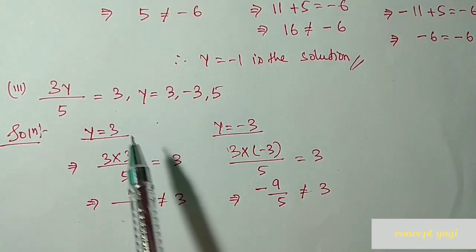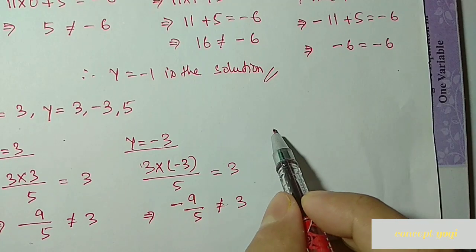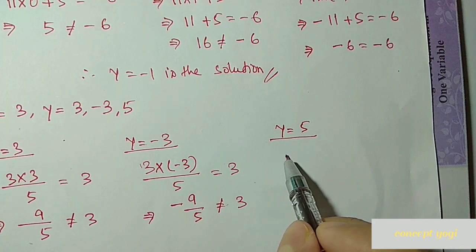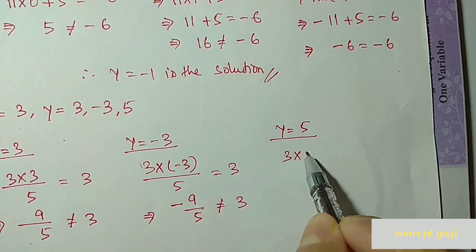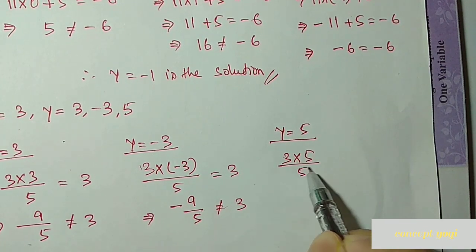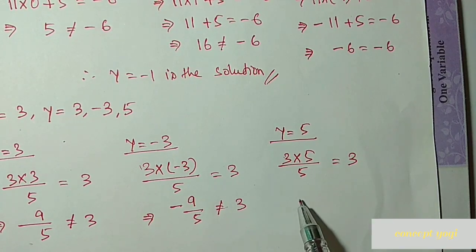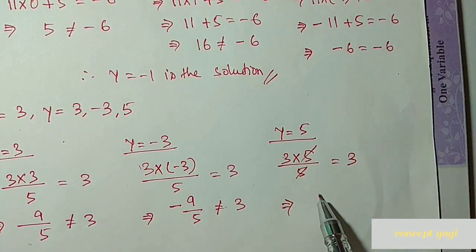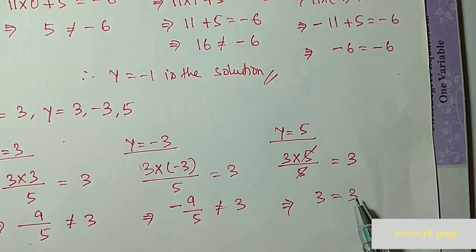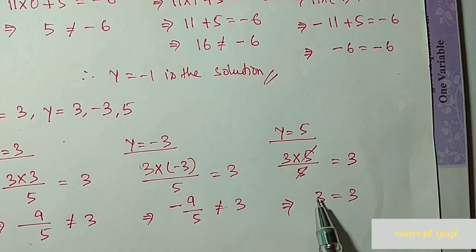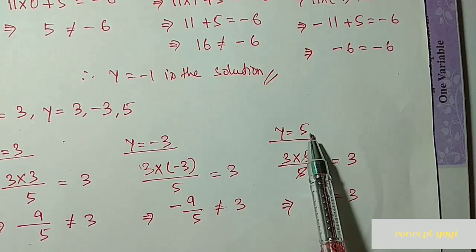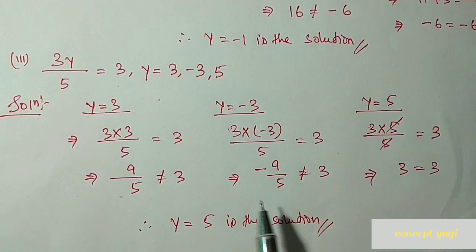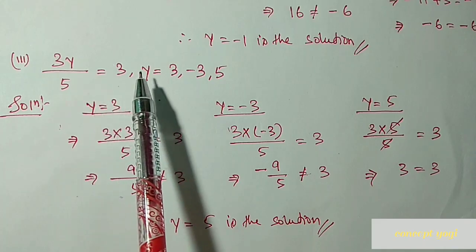Next we put y equal to 5: 3 into 5 divided by 5 equal to 3. The 5 in the numerator and the 5 in the denominator cancel, leaving 3 equal to 3. Left side and right side are equal, so y equal to 5 is the solution of this equation.